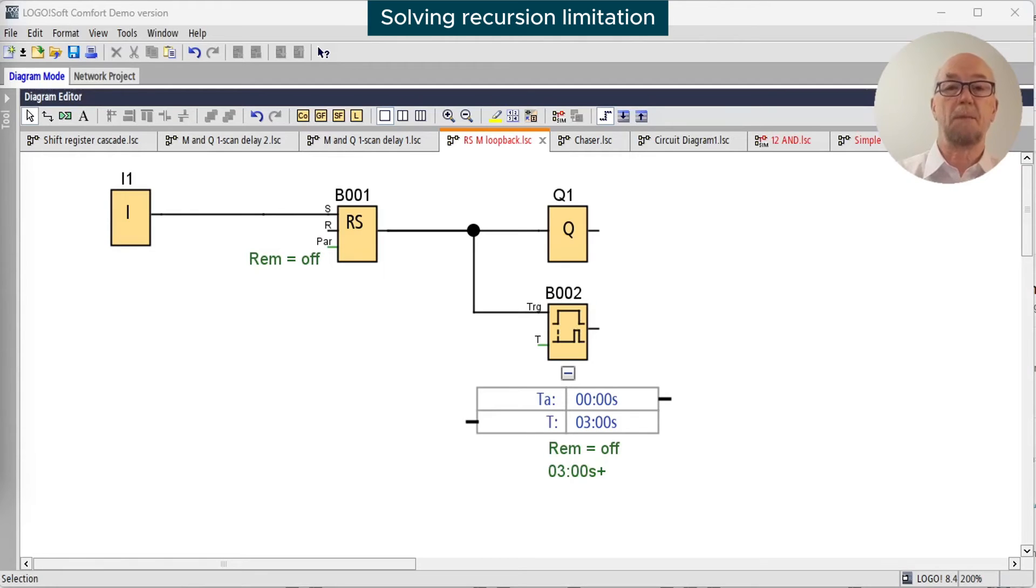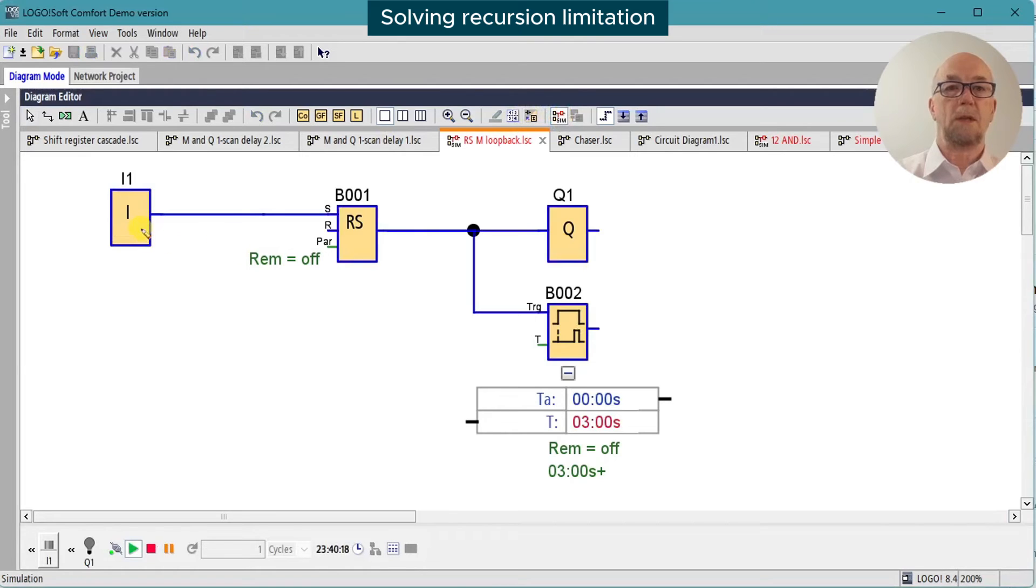The end of scan update of the M and Q blocks gives us a solution to this problem. So let's look at an example. Let's turn on the simulation, and when we turn on the input here, a momentary button, we set the RS latch, turn on the output, and three seconds later the timer output turns on.